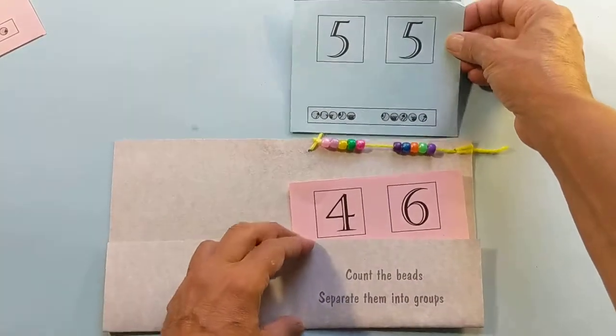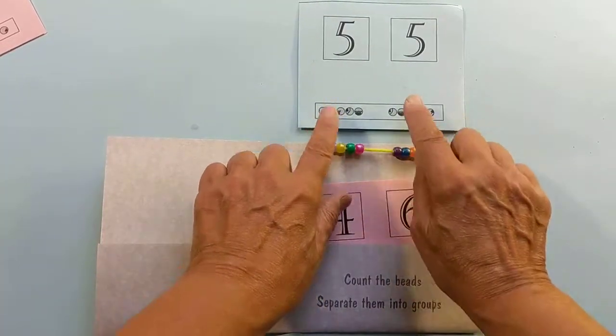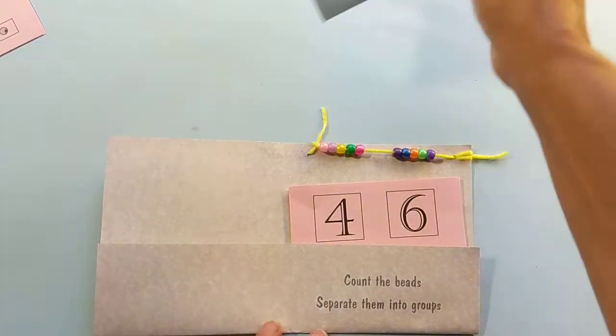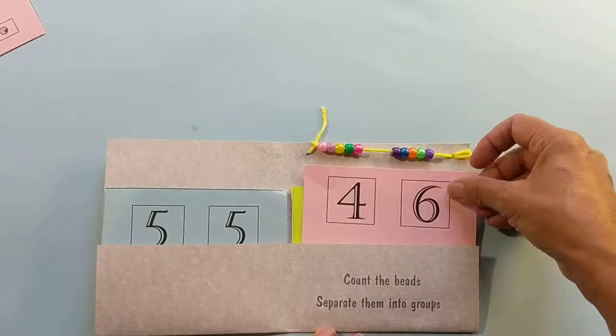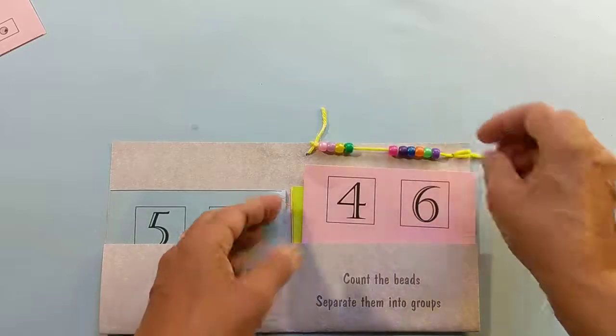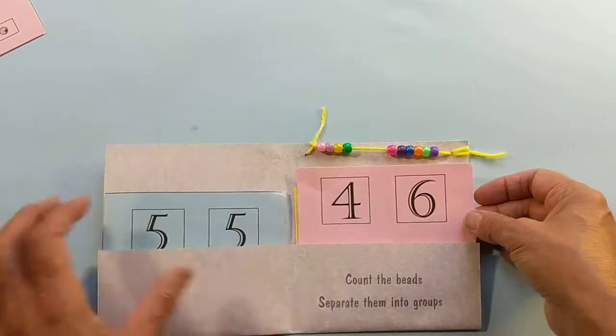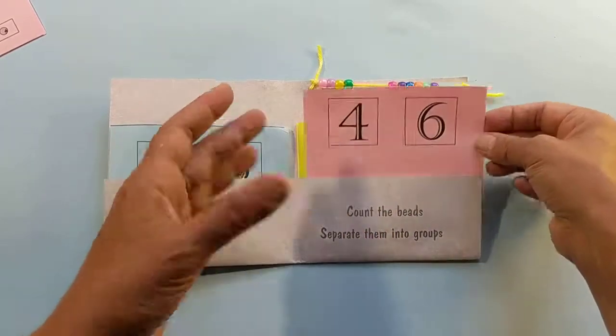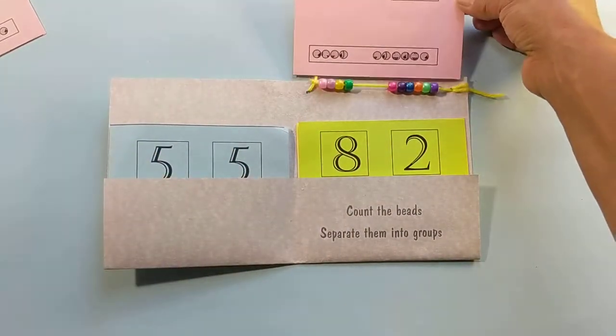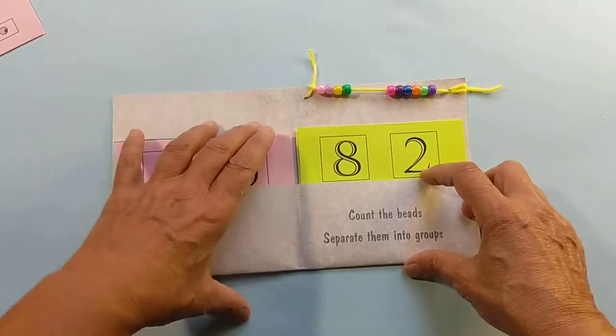The student picks the card up and checks to make sure they did it right. Once they've done it, they put the paper over and try the next one. It's an exercise in understanding how 10 is made out of groups and to get them familiar with these numbers: six and four, five and five, eight and two—that they're parts of 10.